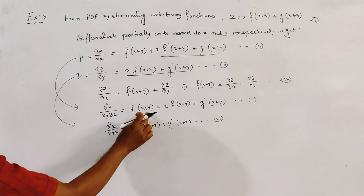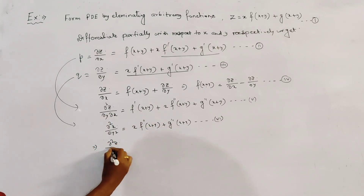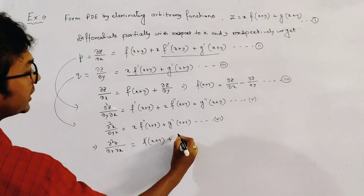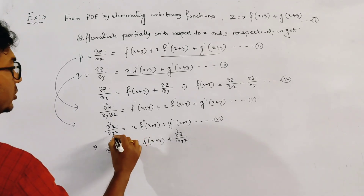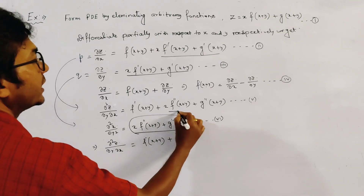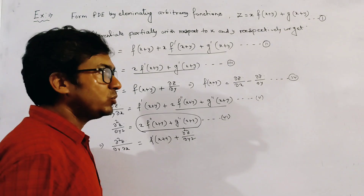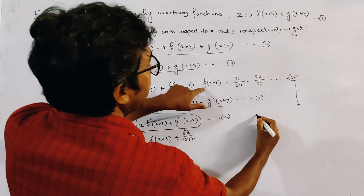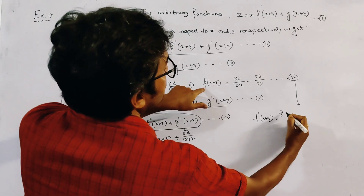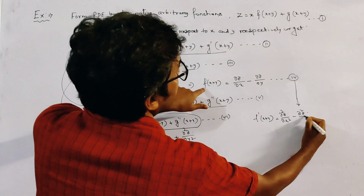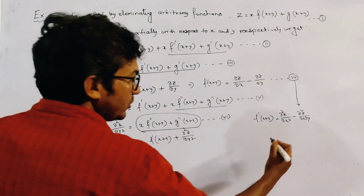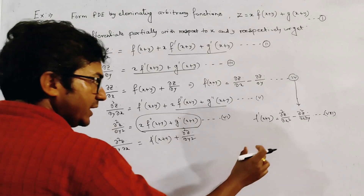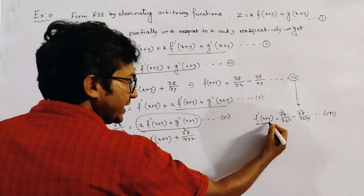From relations 5 and 6, we get del²z by del y del x equal to f dash (x plus y) plus del²z by del y², because we substitute the value of that term. Now differentiating relation 4 with respect to x, we get f dash (x plus y) equal to del²z by del x² minus del²z by del x del y. We name this as relation 7. Using relation 7 in the above, we eliminate f dash (x plus y).